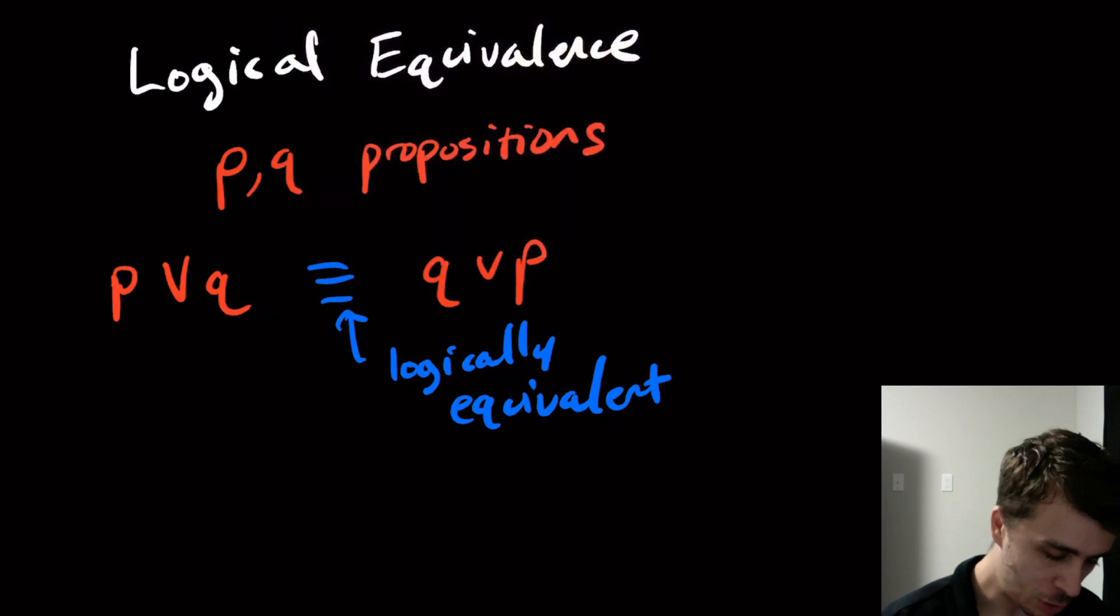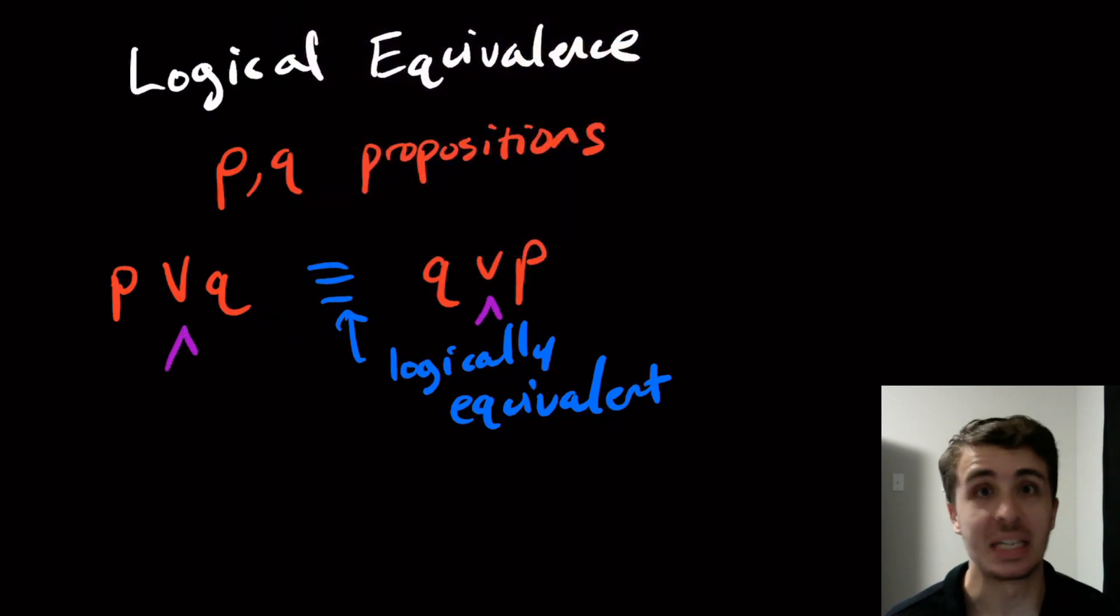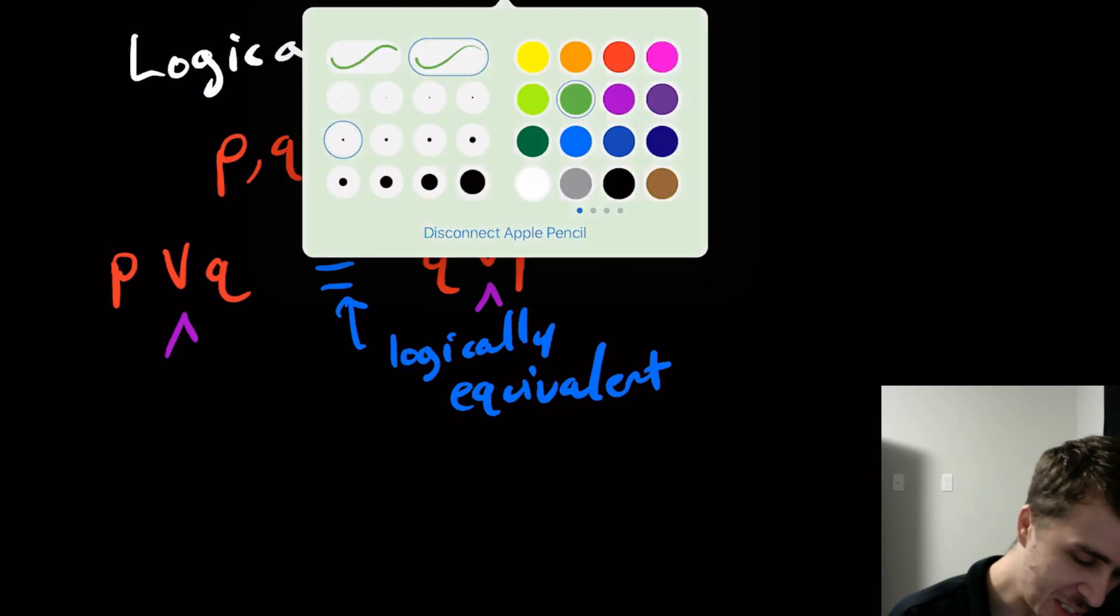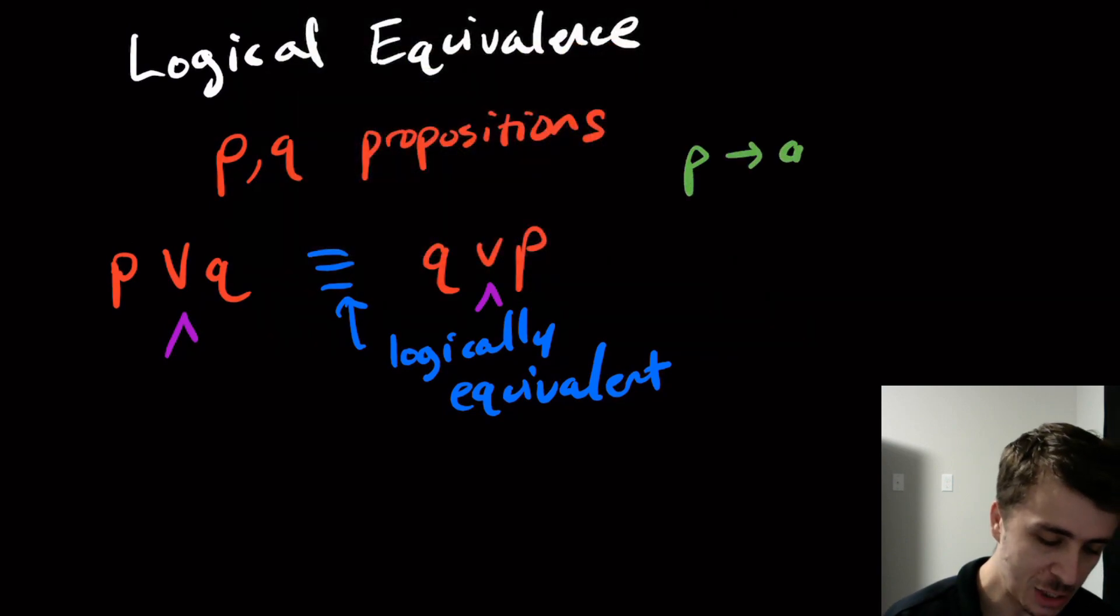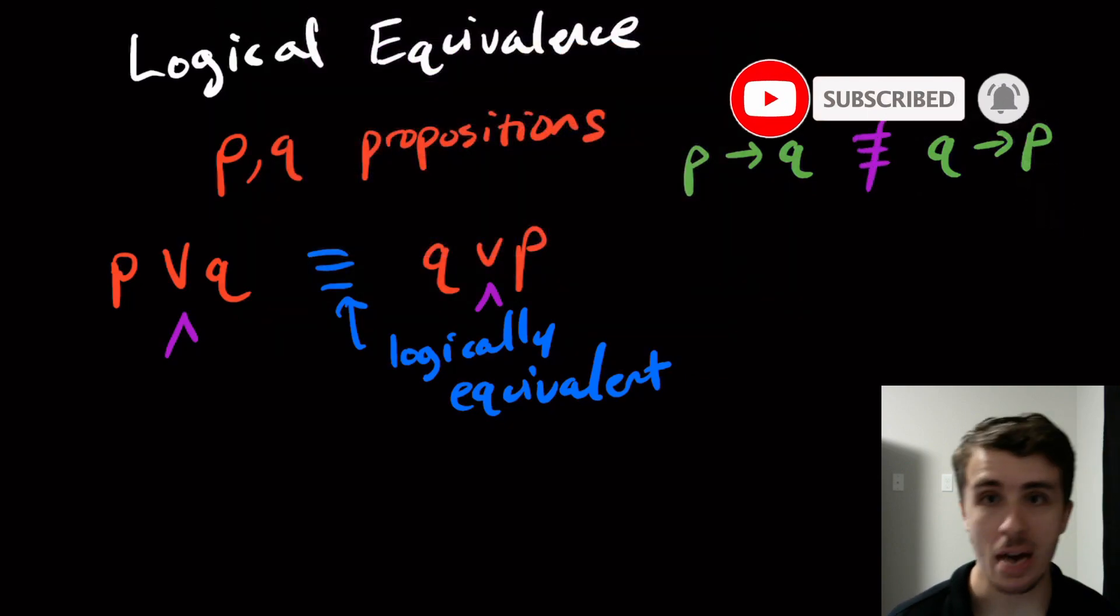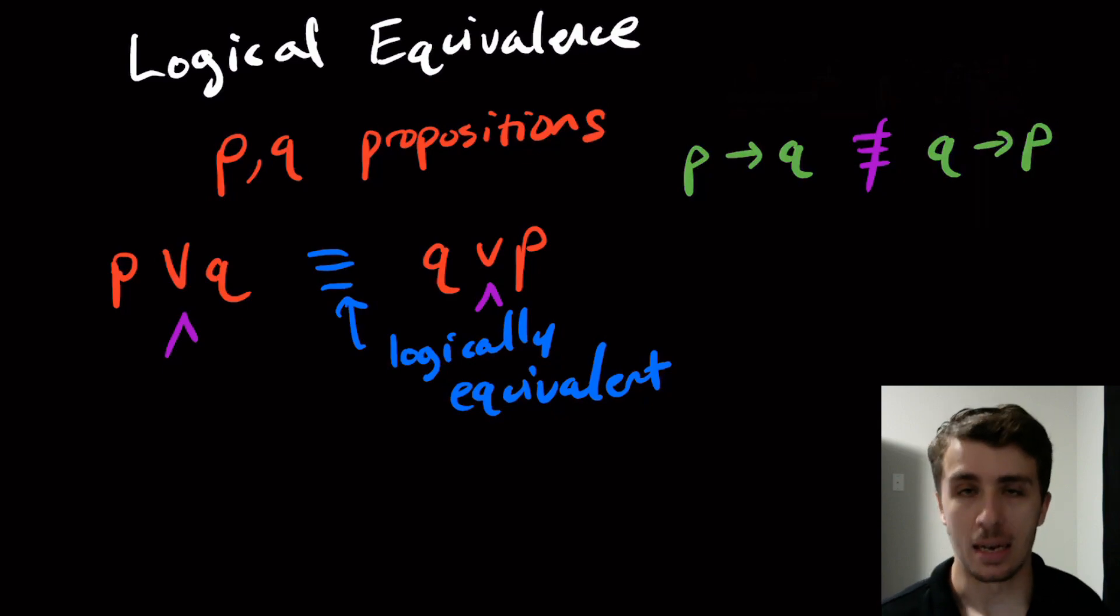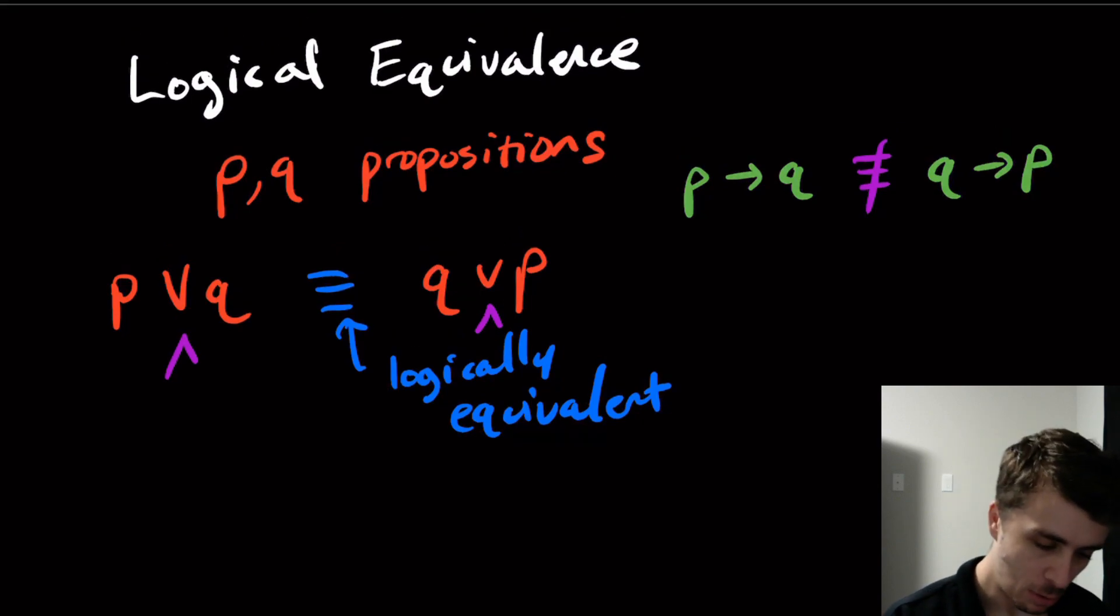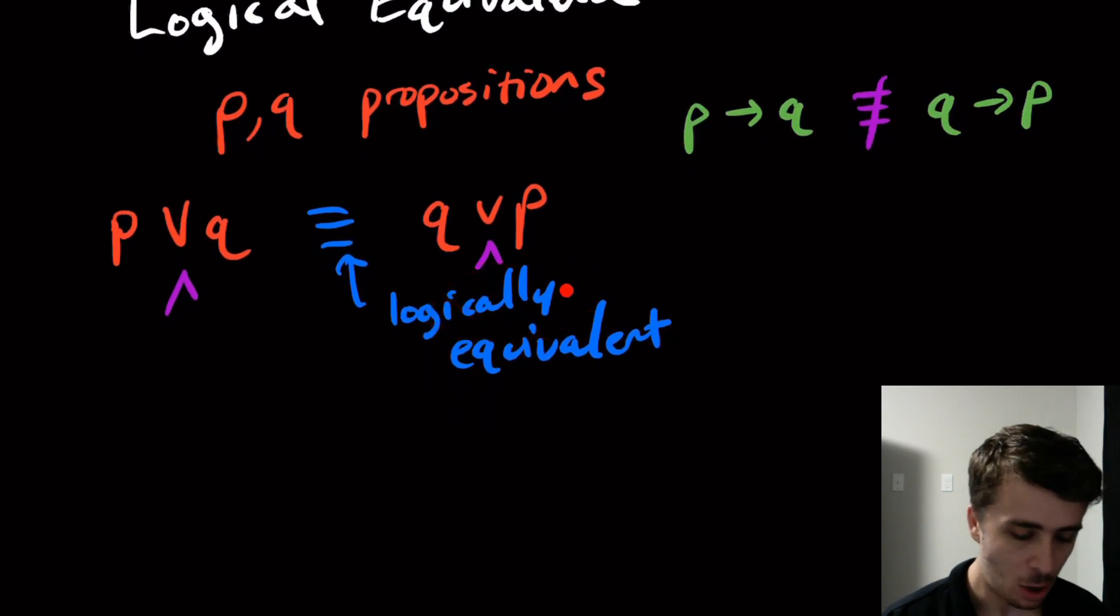And if I switch this to be and on both sides, we get exactly the same thing. But one thing we did see last time is that if I have P implies Q, this is not logically equivalent to Q implies P. So these two statements are not logically equivalent. And you can find out what values of Q and P that you need in order to show that they're not equivalent. So logically equivalent, you can think of as among all the possible valuations of P and Q, the resulting value for both of the two expressions is identical.